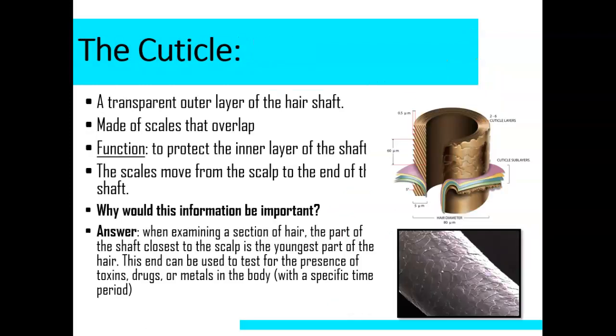The cuticle is a transparent outer layer of the hair shaft, made of scales that overlap. The function is to protect the inner layer of the shaft. The scales move from the scalp to the end of the shaft. Why would this be important for us to know as forensic scientists? When examining a section of hair, the part of the shaft closest to the scalp is the youngest part of the hair. This end can be used to test for the presence of toxins, such as drugs or metals in the body, with a specific time period.